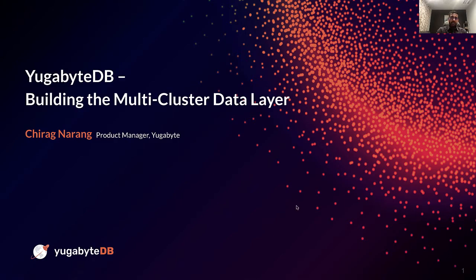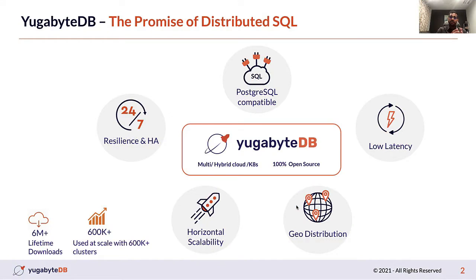Let's start with the YugabyteDB project. YugabyteDB is a fully open source distributed database which is built for the cloud-native world. It can be deployed across private and public clouds, including Kubernetes. It reuses the query layer of PostgreSQL, so it offers advanced features like triggers, stored procedures, and partial indexes. It allows easy migration from other databases like Postgres, MySQL, Mongo, and Cassandra.